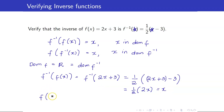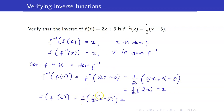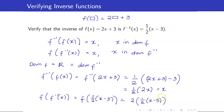Next, compute f of f inverse of x. f inverse of x is ½x minus 3, so f of (½x - 3) is 2 times (½x - 3) plus 3. By order of operations, 2 times (½x - 3) is x minus 3, plus 3 gives x. Therefore, we have verified that these two functions are inverses of each other.